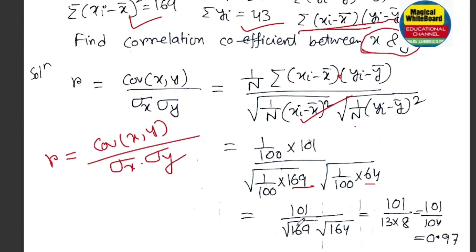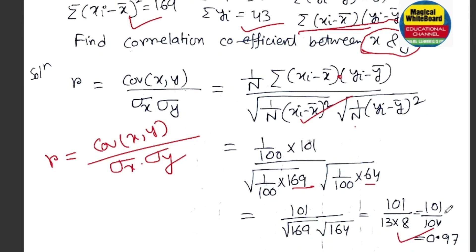Finally, we will get the answer. The formula is: R equals 1 by N summation of (Xi minus X-bar) into (Yi minus Y-bar), divided by the standard deviations. The formula is the square root of 1 by N (Xi minus X-bar) whole square, and the root of the standard deviation. This gives us the correlation coefficient.